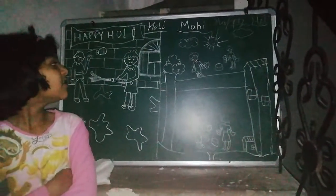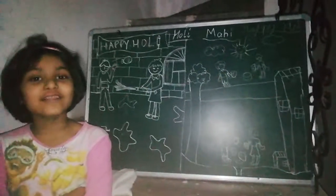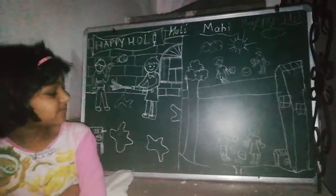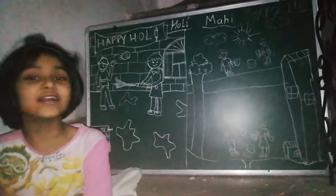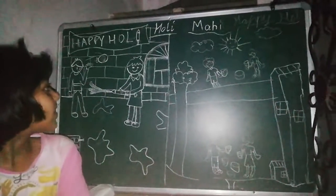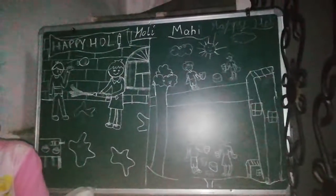This is a drawing of Happy Holi. You can see a Holi festival. It is a boy and a girl. And here there are two boys and four children. One is a girl and two boys are there.